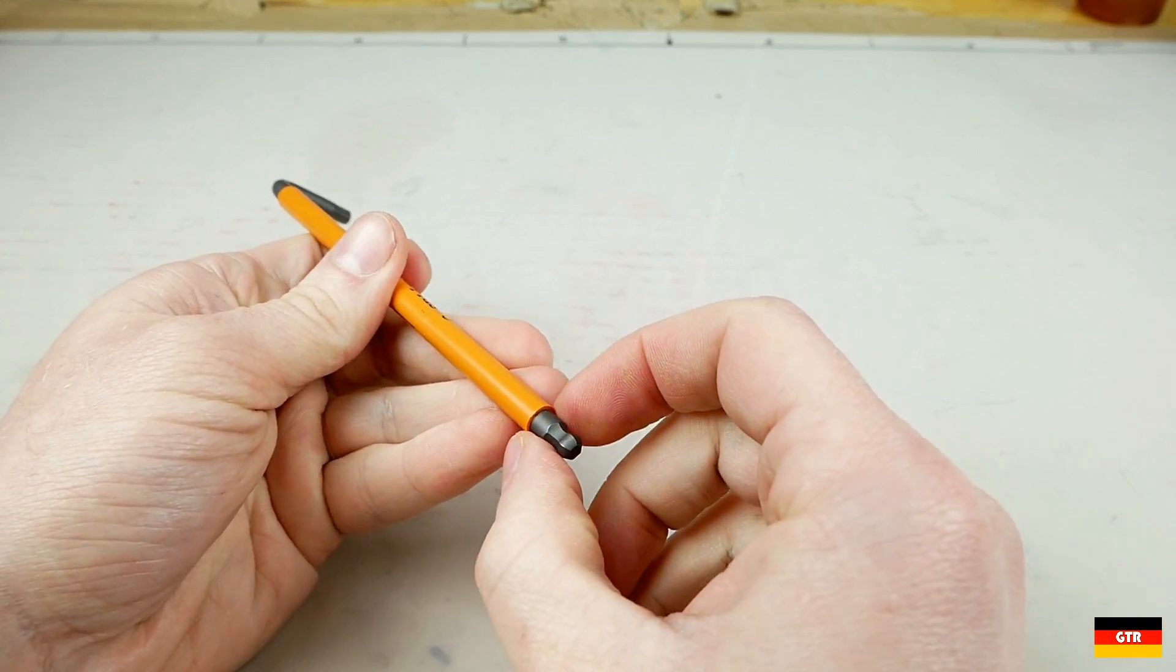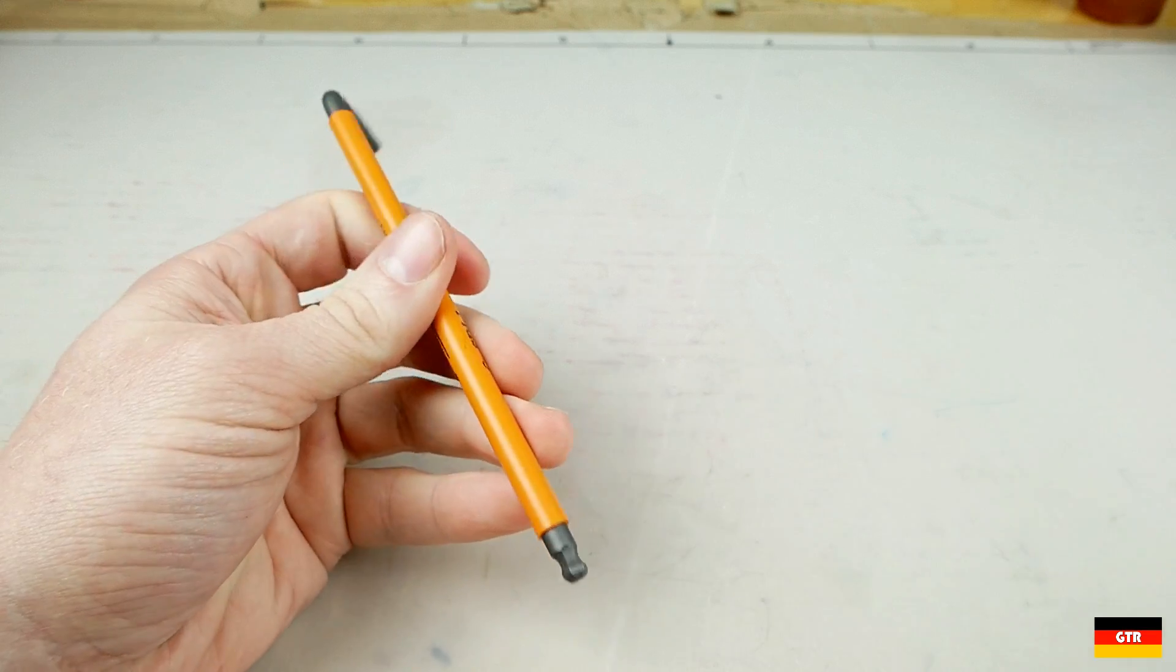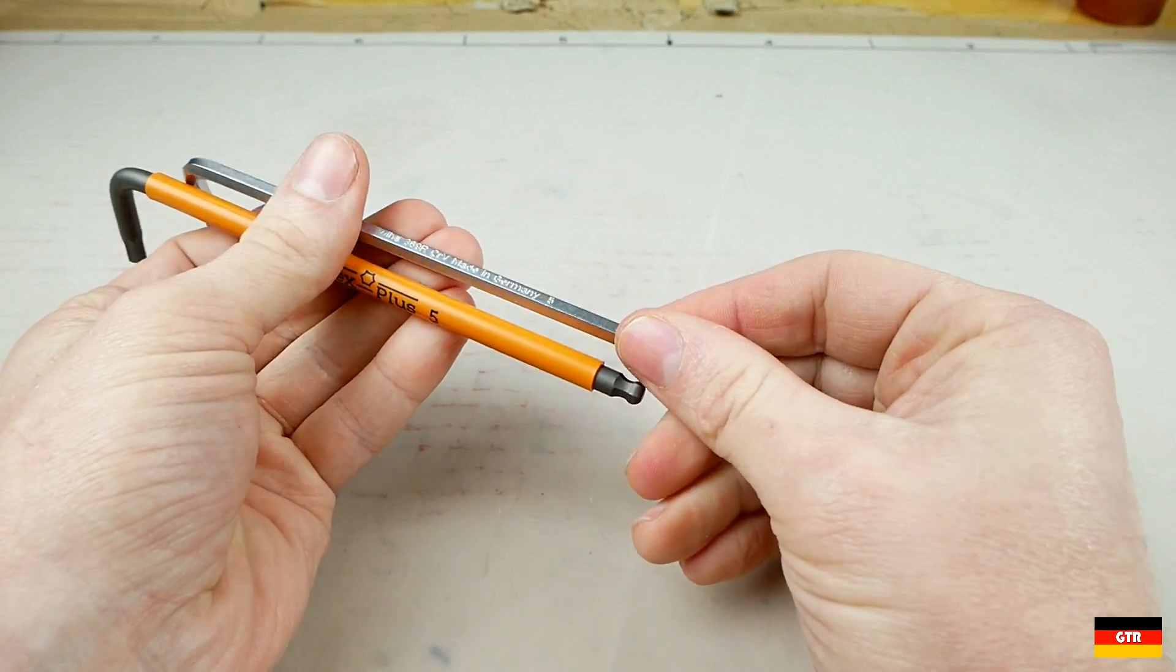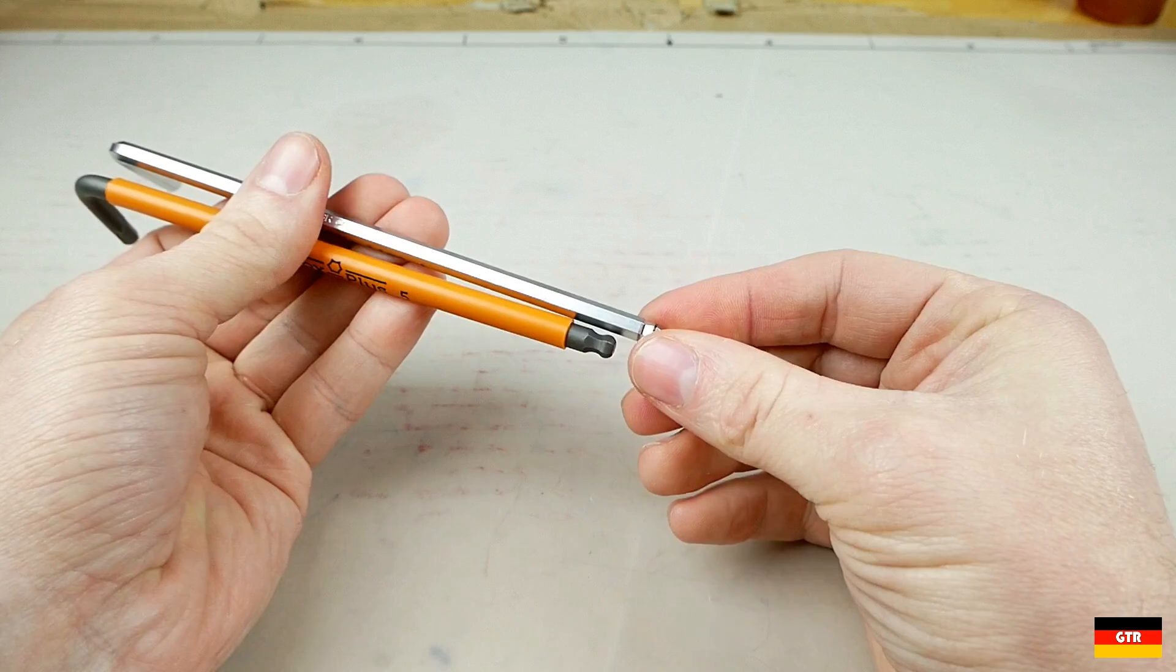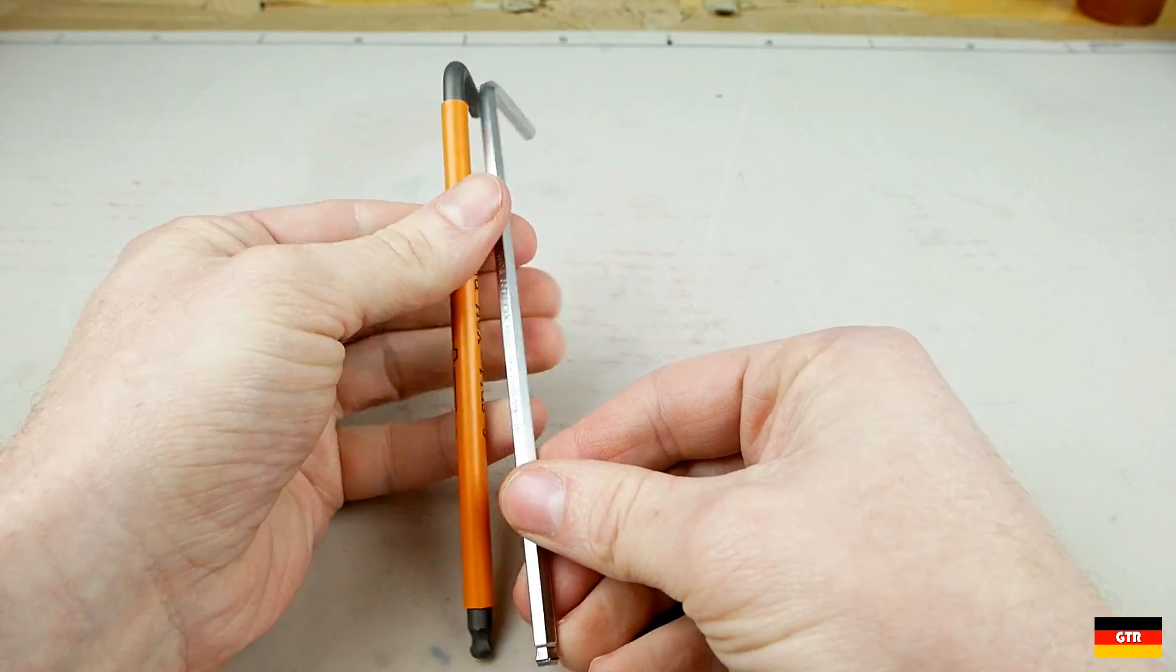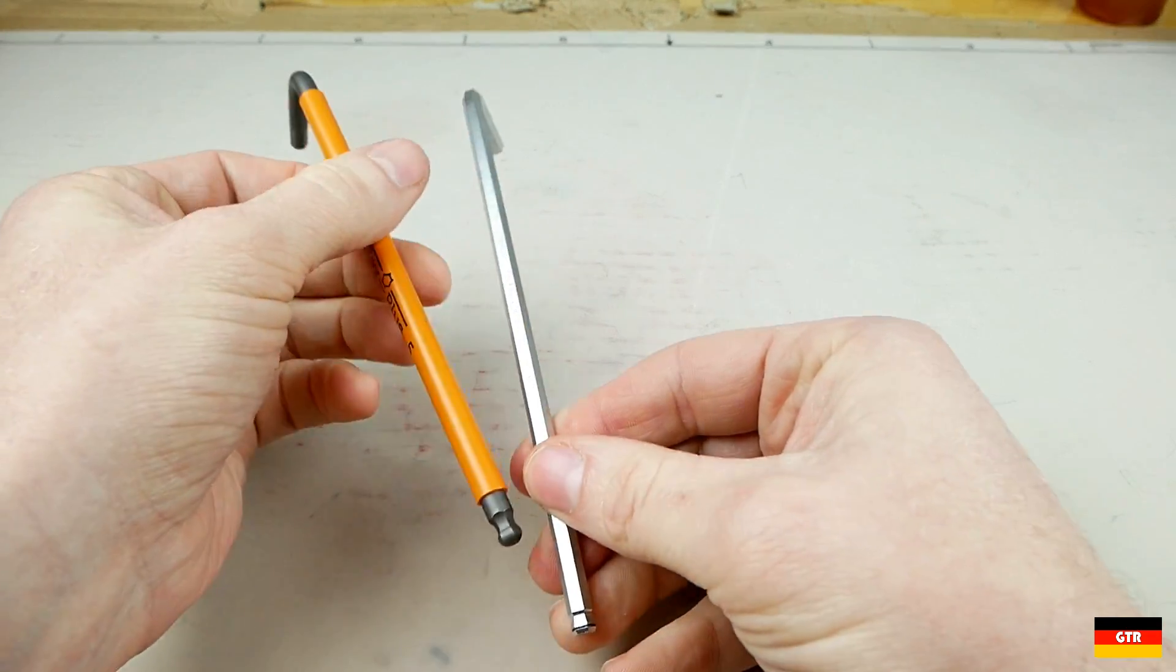And they're afraid that this would interfere possibly with that. So if you compare it to another brand, this is a Wiha, same size 5mm. It's pretty obvious that yeah, the Wera is definitely much wider.